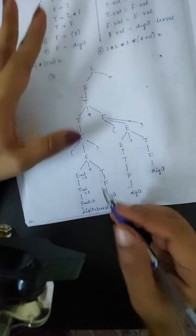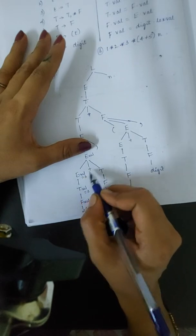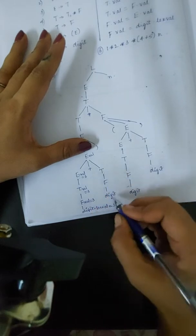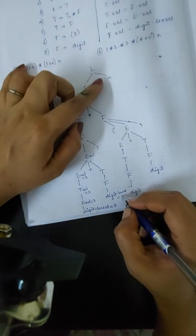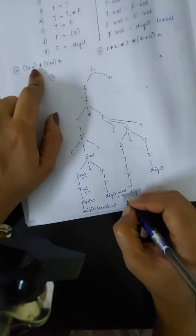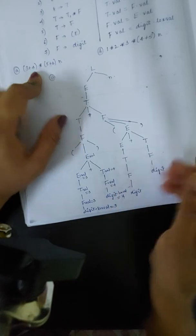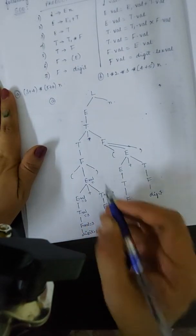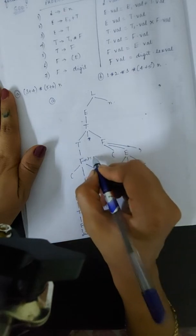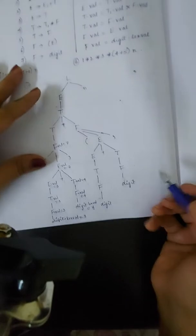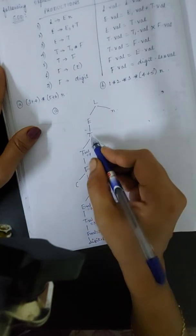Now E dot val is equal to E plus T. We have got the E value, and now we have to derive the value for T, which is obtained from the leaf node. The digit value is 4, so F dot val becomes 4, and T dot val in turn becomes 4. Now E dot val equals 3 plus 4, which equals 7. So F dot val becomes 7, and T dot val becomes 7.